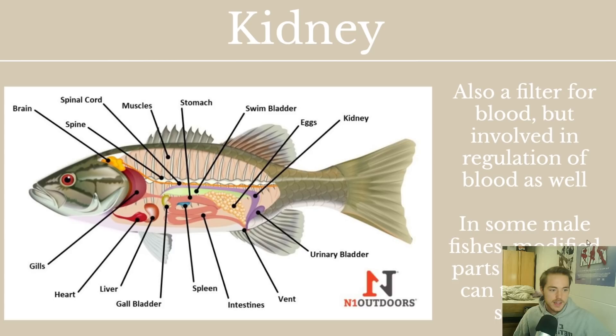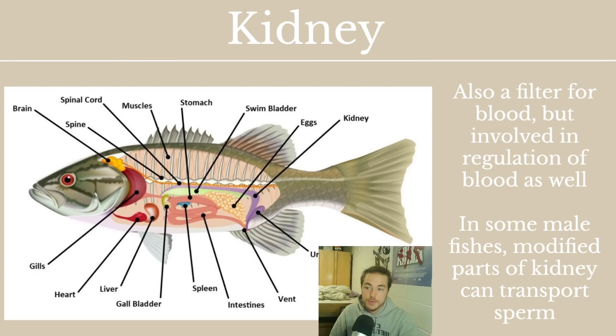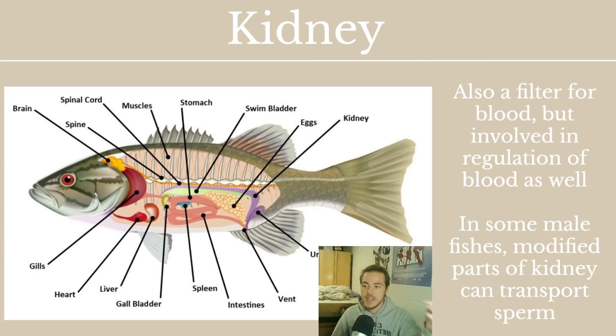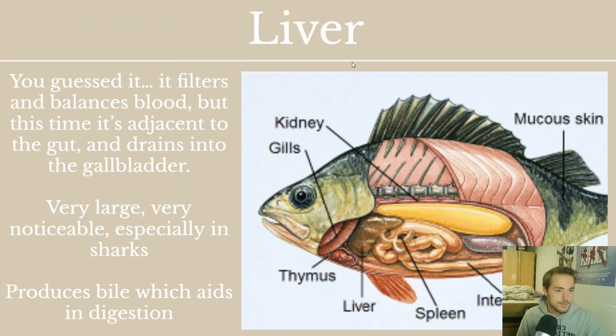The kidney is also a filter for blood, but it's involved in the regulation of blood as well as filtering. Whereas the spleen just filters blood, the kidney can also add things back in or take things out to regulate chemical levels in the blood. The spleen acts like a net stopping harmful things, whereas the kidney detects levels in the blood and adjusts them. In some male fishes specifically, the kidney can also be involved in sperm transport, with modified parts of the kidney evolved to transfer sperm.